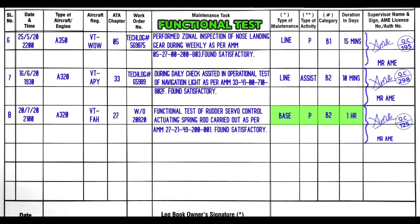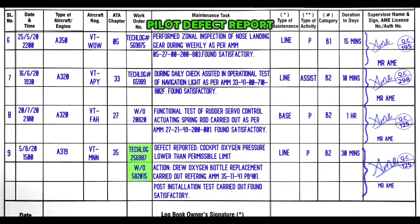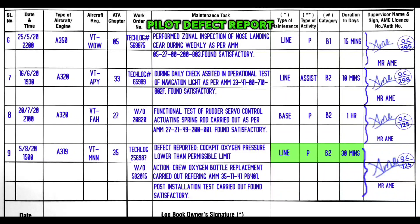This functional test was done in base, so type of maintenance is base, performed P, B2 task with one hour duration. Example for pilot defect report: it was reported in transit so there is a tech log number, and since we did a replacement, a work order number is also there. As seen in workshop entries, first write the defect reported: cockpit oxygen pressure lower than permissible limit. Then the action: crew oxygen bottle replacement carried out referring AMM 35 so and so. Post installation test carried out, found satisfactory. Done in line, performed myself — P, B2 task, 30 minutes duration.